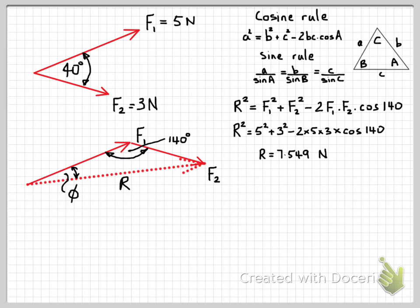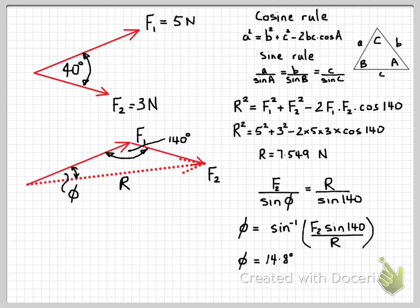Let's say we also want to find one of the angles. So for example, the angle here. We can now use the sine rule to do that. So we have f2 over sine phi equals r over sine 140. And rearranging that equation to make phi the subject of the equation. We have inverse sine of f2 sine 140 over r gives us an angle of 14.8 degrees.